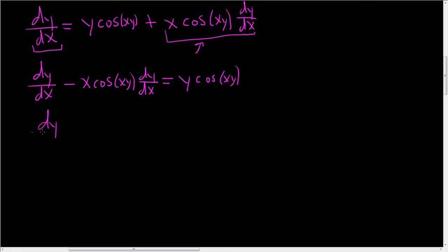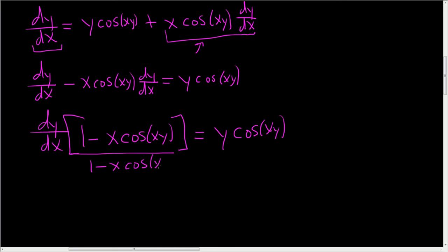So now we'll factor out dy/dx. We end up with 1 minus x cosine xy equals y cosine xy. To finish, divide everything by this, so 1 minus x cosine xy, and likewise over here, 1 minus x cosine xy.